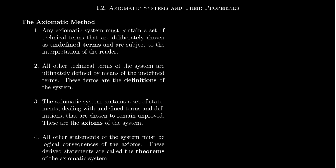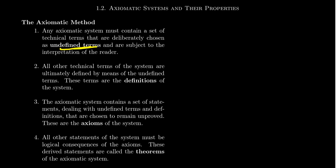The first step of the axiomatic method is that any axiomatic system must contain a set of technical terms that are deliberately chosen as undefined terms and are subject to interpretation by the reader. So every axiomatic system has some collection of terms that are intentionally undefined. In some degree, we don't actually know what these things are, but they're allowed to be interpreted. A lot of this will make sense when we look at some concrete examples of axioms and undefined terms that we'll see in the next video.